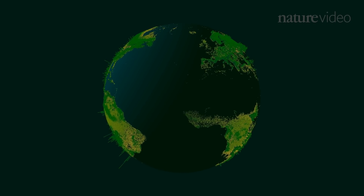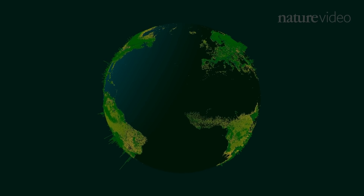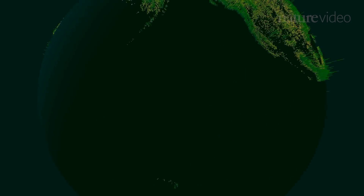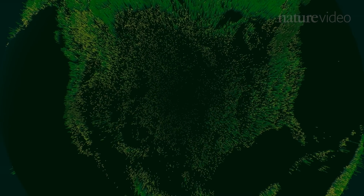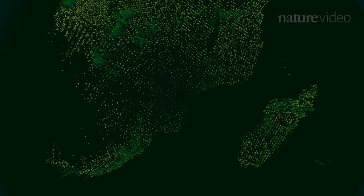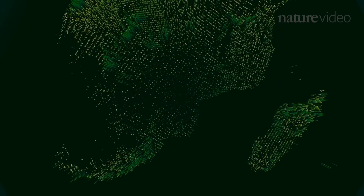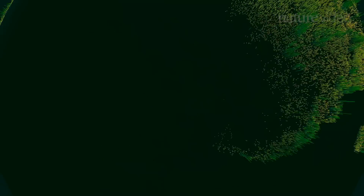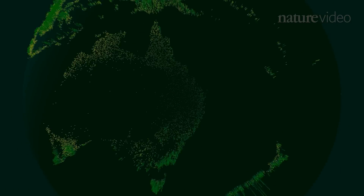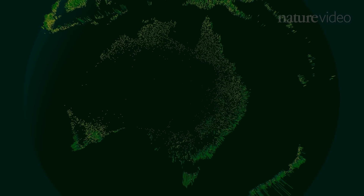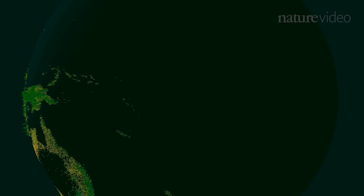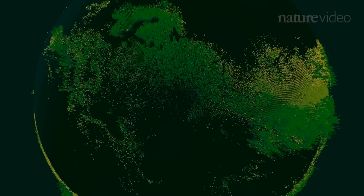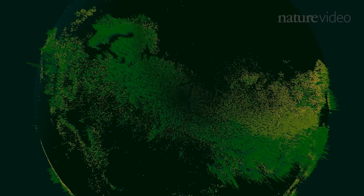Measurements were collected by thousands of people out counting trees in forests all over the world. The average density of trees at each location is represented by the height of the green lines. Some of the densest areas are these subarctic forests, where you can find a tree every square metre.